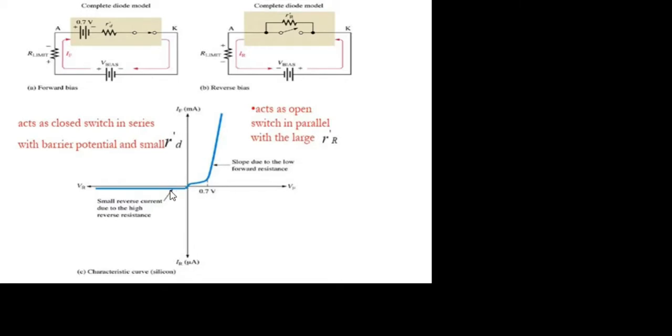Looking at the characteristics curve of the complete diode: when forward biased, it acts as a closed switch in series with the biopotential and a small forward resistance. When it is reverse biased, it acts as an open switch in parallel with a large reverse resistance. When the diode is forward biased, it needs the biopotential voltage to cause current to flow through it. When reverse biased, there is a small amount of current flowing due to the large reverse resistance.